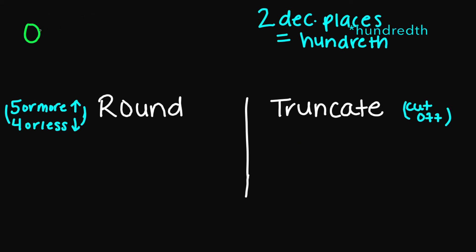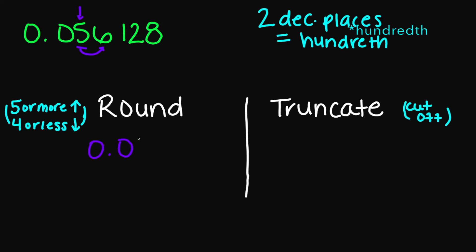Let's try 0.056128. Two decimal places — counting 1, 2 — puts me right here at the 5. If I look next door, I have a 6, which is greater than 5, so I need to round up. This 5 goes up, giving me 0.06 rounded to two decimal places. And if I truncate, I'm chopping it off right here, so that's 0.05.